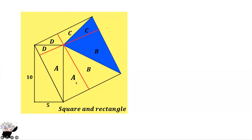It means that the total area of the square is 2A + 2B + 2C + 2D. Now, we can find the area of this triangle, which is D + A, and it equals half the area of the rectangle — because this is the diagonal. So D + A = half × base × height = half × 10 × 5 = 25.